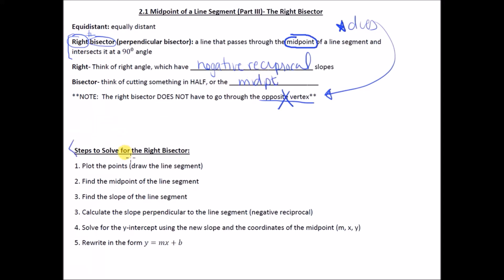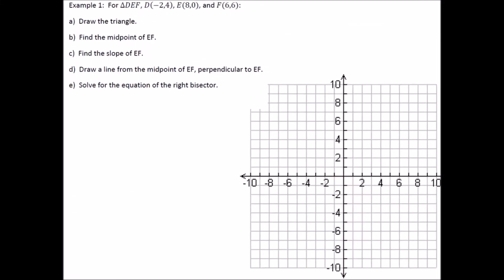Here are the steps: first, I would definitely plot — I always draw, even if it's just a sketch. Then find the midpoint, which is easy. After that, find the slope of the original line segment and take the negative reciprocal — that gives us the slope of our right bisector. Then we have the slope and a point, sub those in, solve for b, and rewrite.